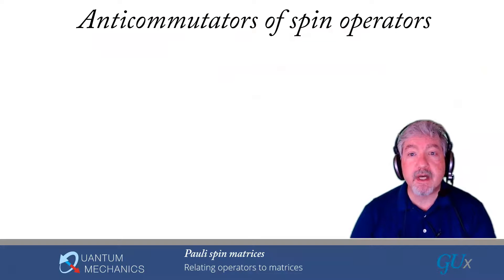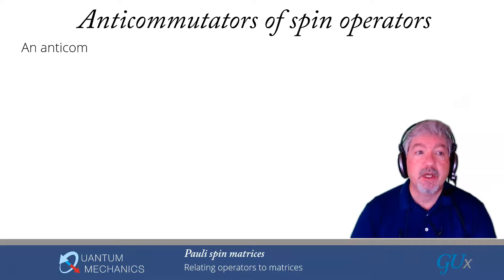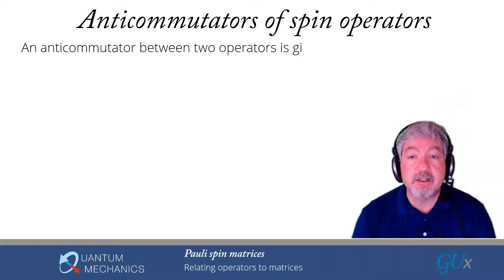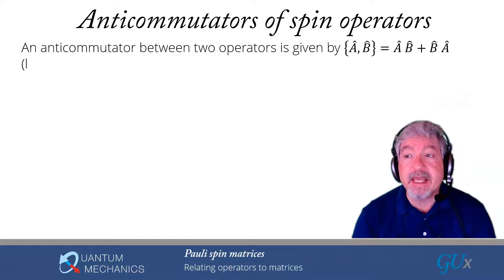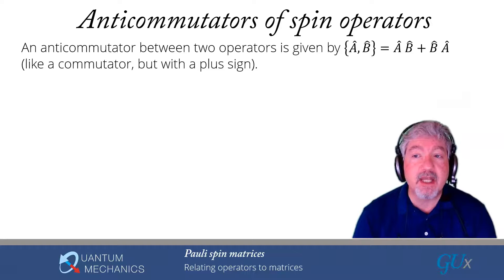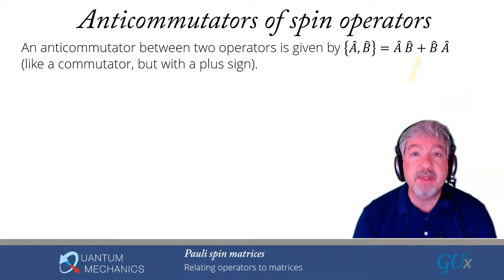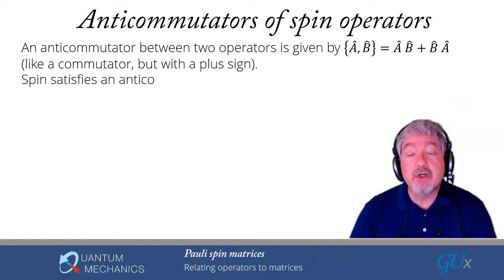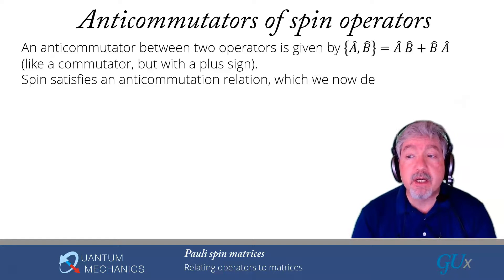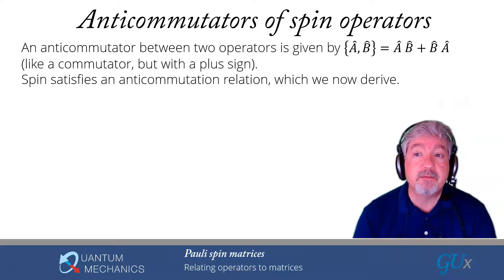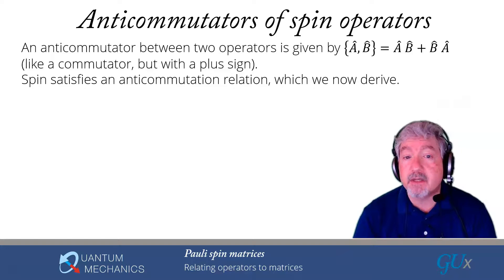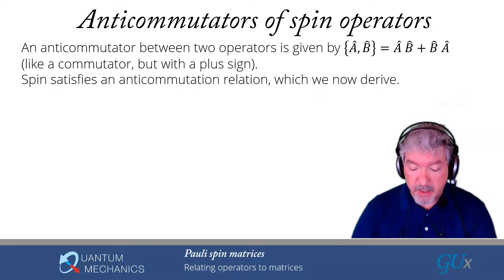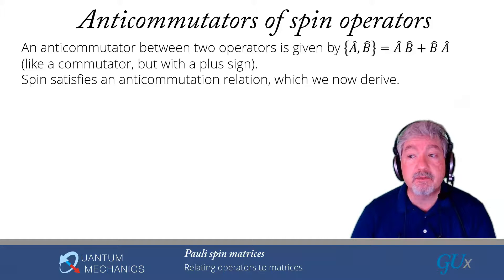We have one more thing to cover: the anticommutation relation of spin operators. So far we've only talked about commutation relations, but spin operators also satisfy something called an anticommutation relation. An anticommutator is like a commutator, except instead of subtracting BA, you add: {A, B} = AB + BA. Anticommutators play a very important role in the study of fermions. For spin, it turns out the spin operators satisfy an anticommutation relation, and it's fairly easy to derive.